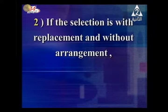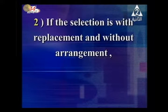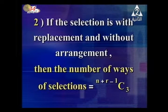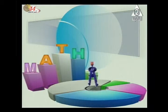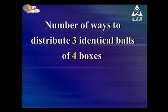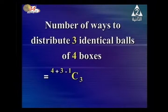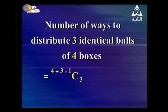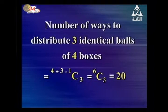Rule two: if the selection is with replacement and without arrangement, the number of ways is (n + r − 1)C r. Example: the number of ways to distribute three identical balls among four parts is (4 + 3 − 1)C3 = 7C3 minus 1, which by calculator equals 20 ways.